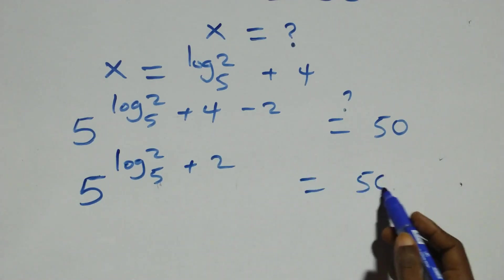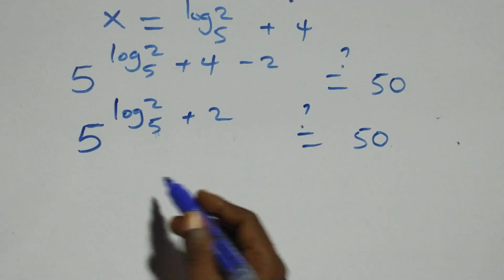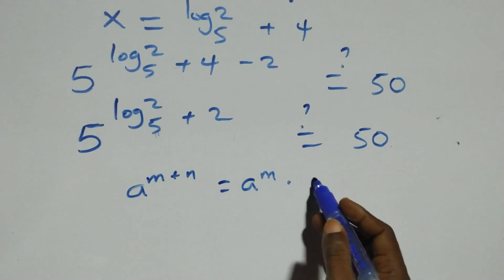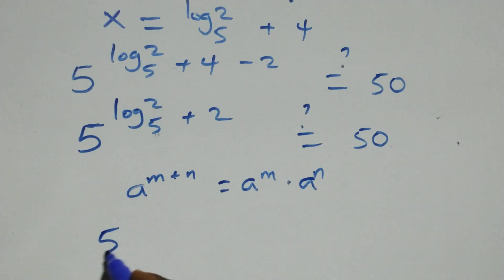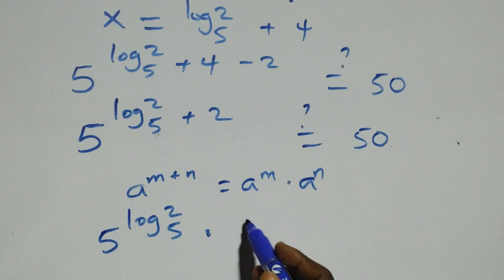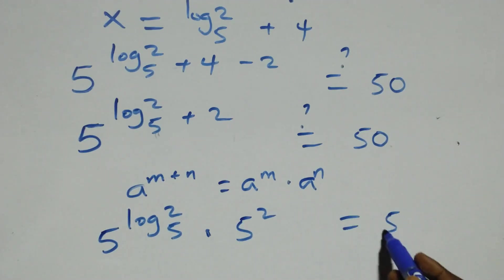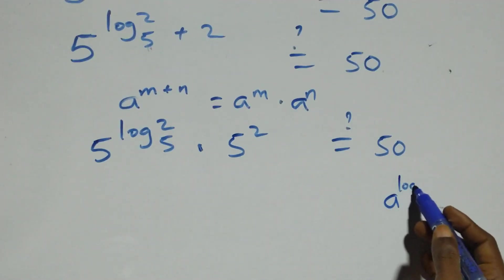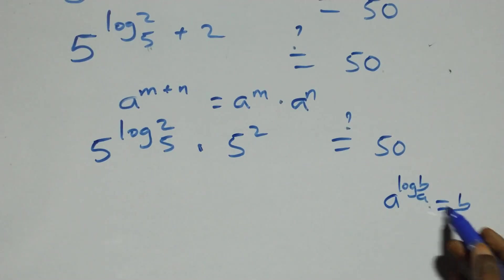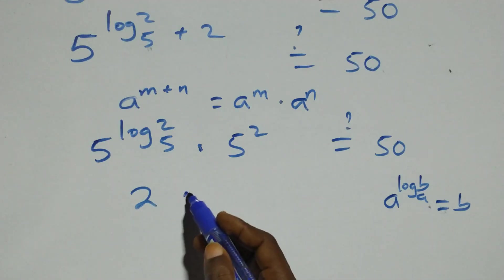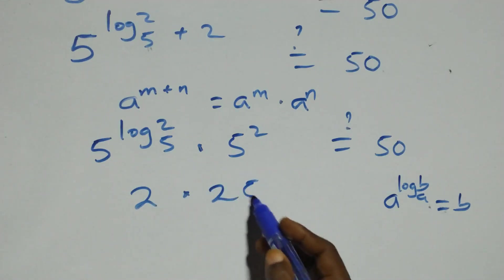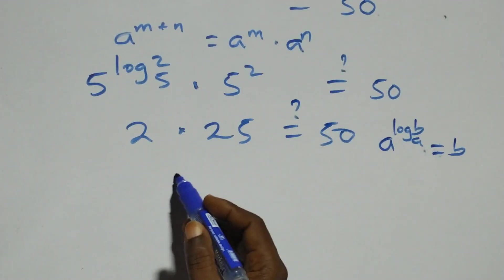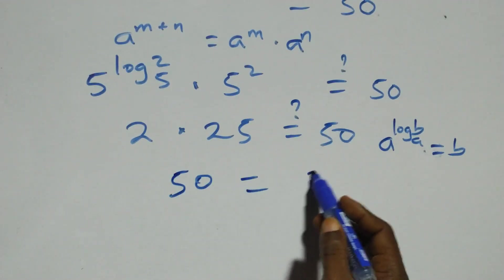Is this equal to 50? This follows the law of indices: a raised to power m plus n equals a raised to power m times a raised to power n. So we have 5 raised to power log base 5 of 2, times 5 squared. Applying the identity a raised to power log base a of b equals b, we get 2 times 25, which is 50. This equals 50 on the right-hand side.